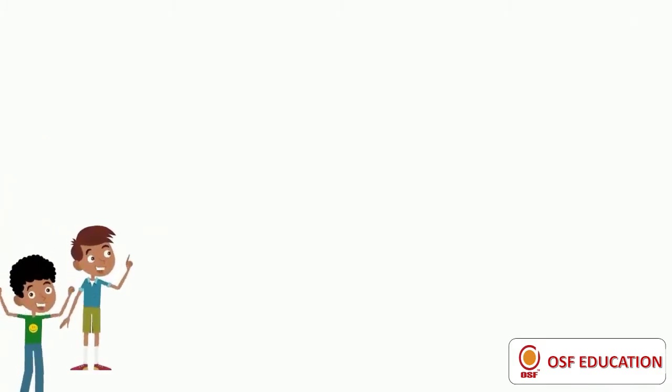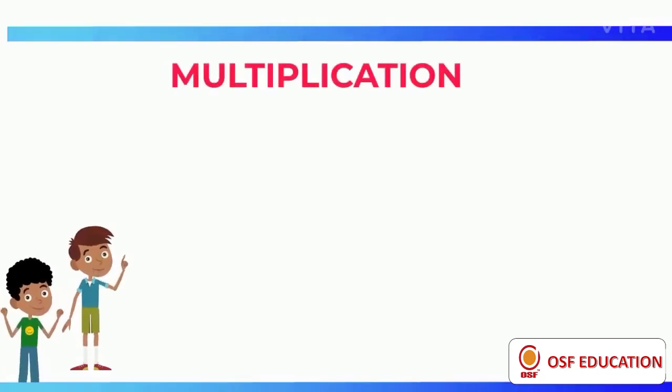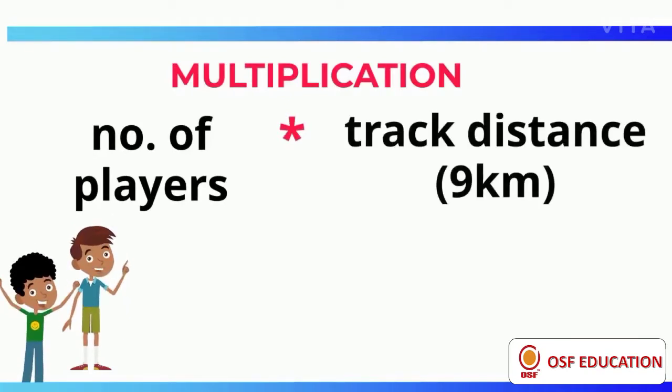So we are using a simple technique called multiplication. In multiplication, we simply do number of players times distance covered by them. So 30 times 9.